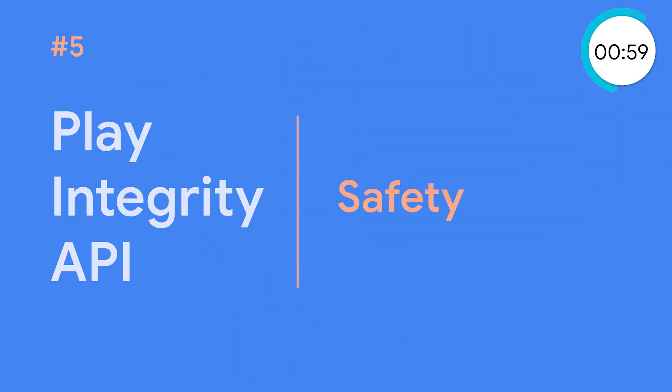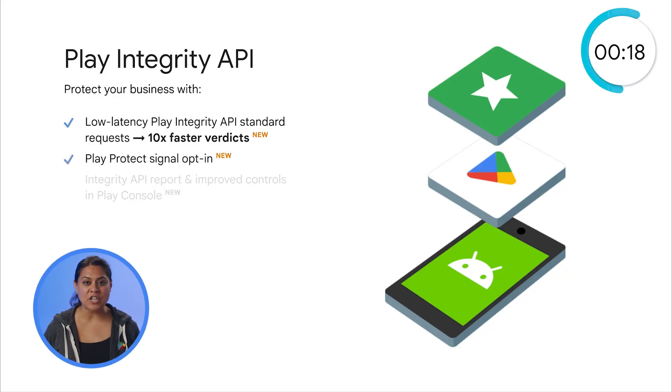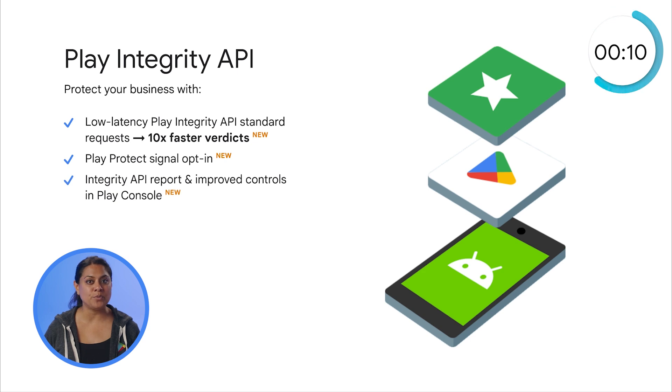Finally, we're committed to making Google Play the safest place to build your business. Developers have been all over the Play Integrity API since we launched it last year. The API checks that user actions and server requests are genuine, helping to prevent abuse, fraud, unauthorized access, and cheating in games. We've got low-latency Play Integrity API standard requests — now out of beta and available to all developers — giving you integrity verdicts that are ten times faster. There's also a new signal you can opt into for checking whether Play Protect is on or off on a device and whether any malware is detected. And an Integrity API report with improved controls in Play Console helps you spot issues, adapt your anti-abuse strategy, and analyze the breakdown of API responses across your install base.